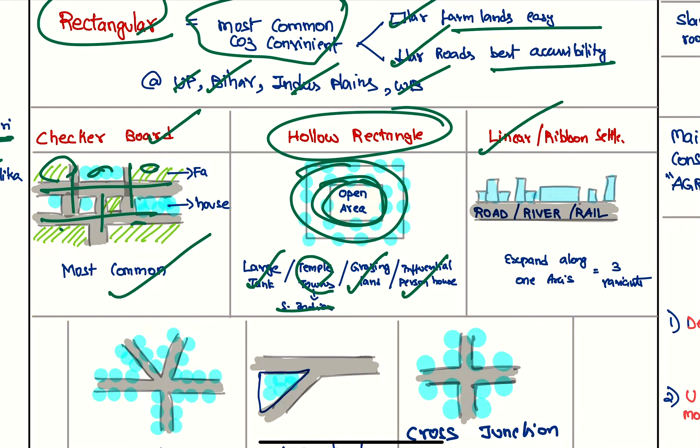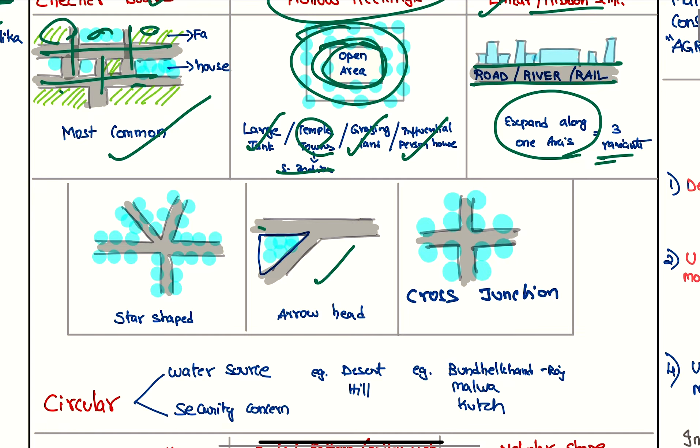Next we have linear ribbon settlement around a longer road, river, or rail—the settlements expand along one axis. There are three variants. First is arrowhead where there is a confluence of two roads. It develops in the confluence area. Next, there are two roads at a cross junction; we have the settlements here. If it starts here because of too many roads, it turns into a complex shape.